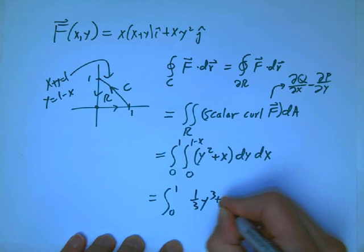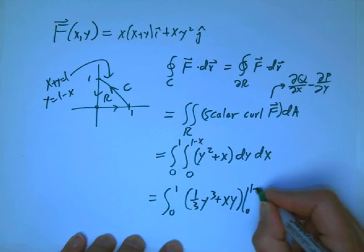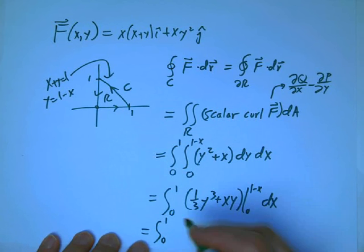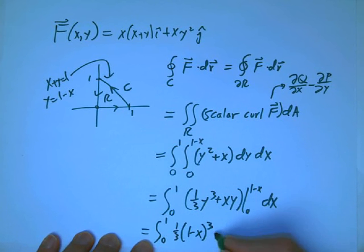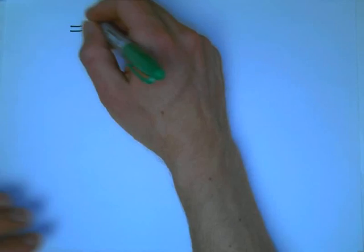Integrate in y, we get (1/3)y cubed plus xy from 0 to (1 minus x) dx, equals integral from 0 to 1. (1/3)(1 minus x) cubed plus x times (1 minus x). And 0 doesn't contribute anything, as it happens. dx. And that's not too hard to finish off.